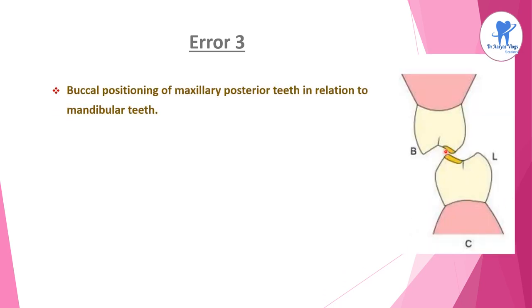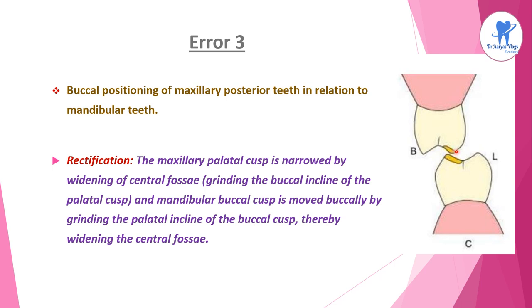Error 3 is the buccal positioning of the maxillary posterior teeth in relation to the mandibular teeth. The rectification is by narrowing the maxillary palatal cusp through widening of the central fossa — that is, grinding the buccal incline of the palatal cusp. The mandibular buccal cusp is moved buccally by grinding the palatal incline of the buccal cusp, thereby widening the central fossa.